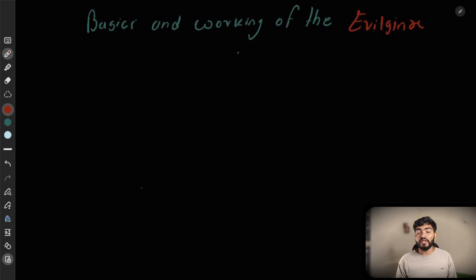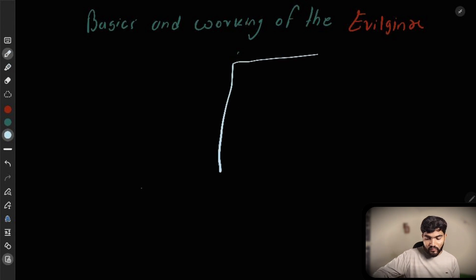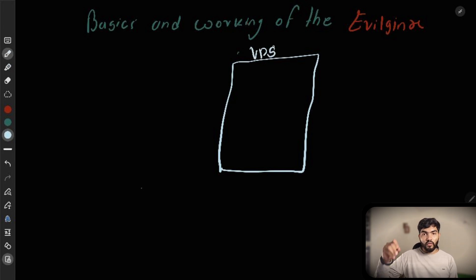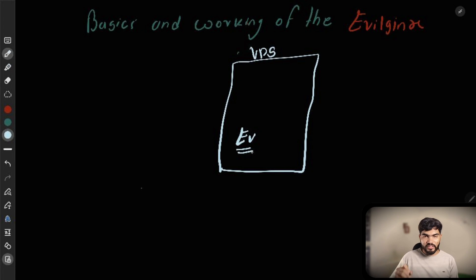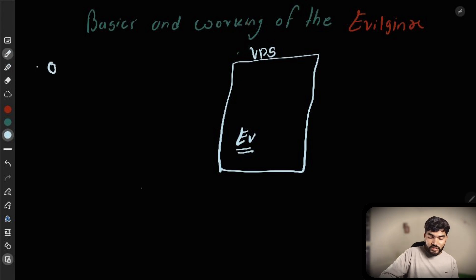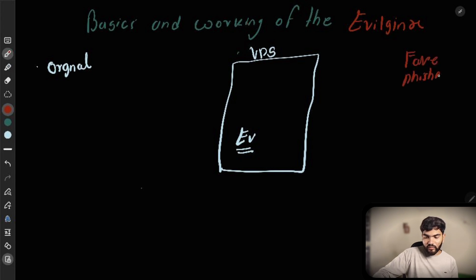So without wasting time, let's get started. We need one server, or a VPS — Virtual Private Server. On this VPS we are going to set up EvilGinx. EvilGinx takes an original website and creates a fake or phishing version of it.